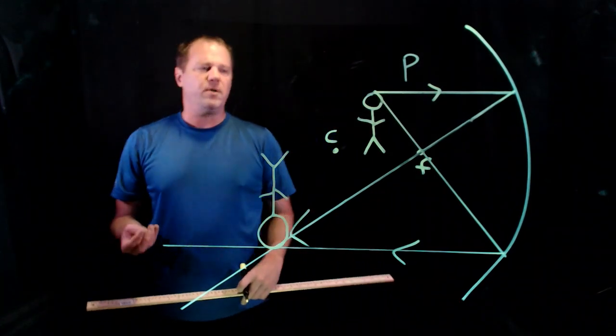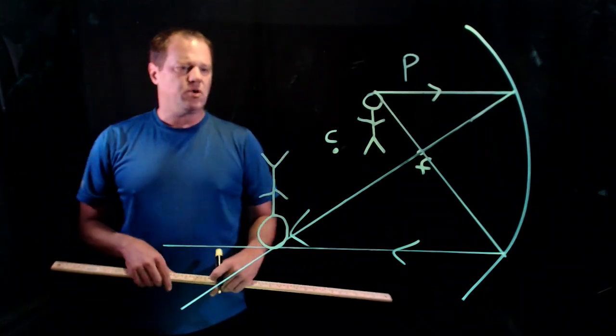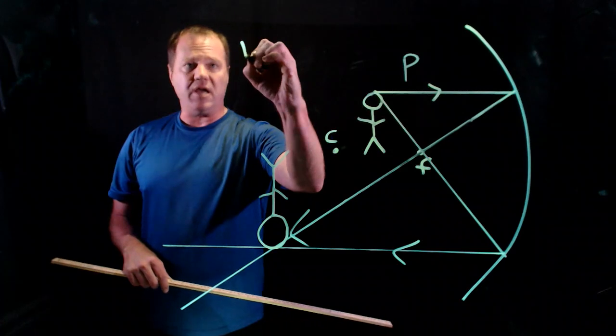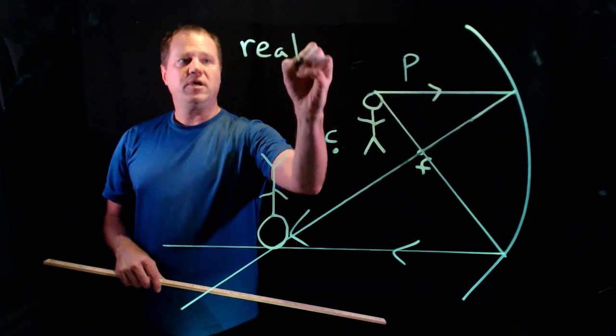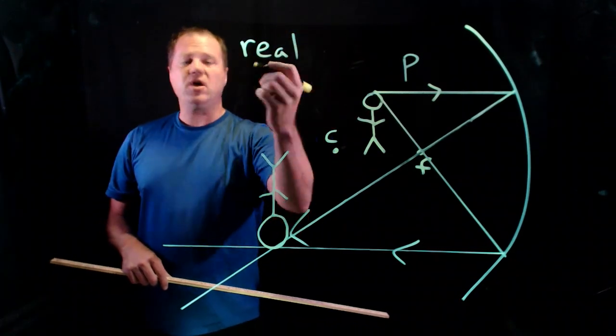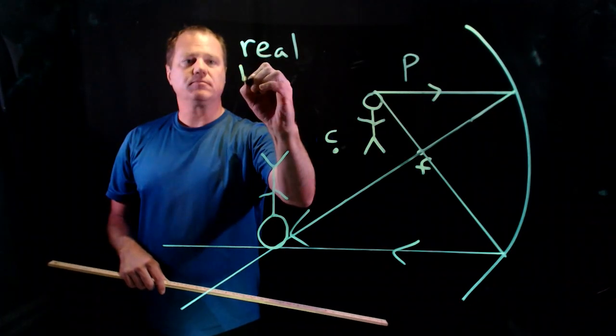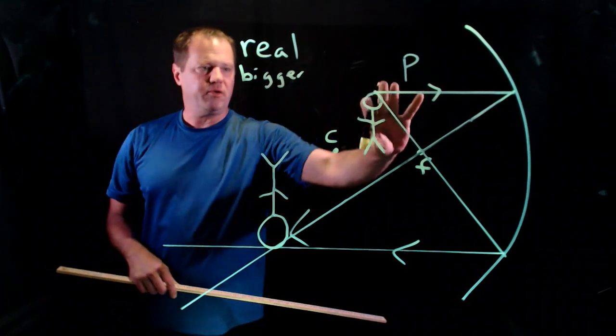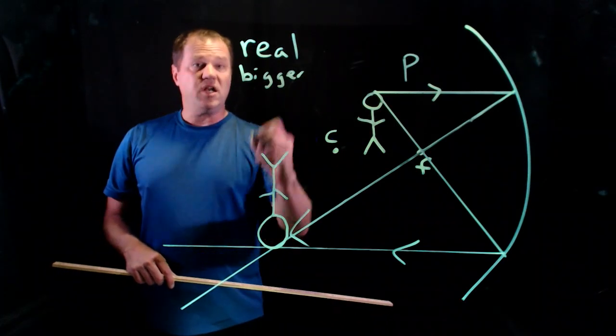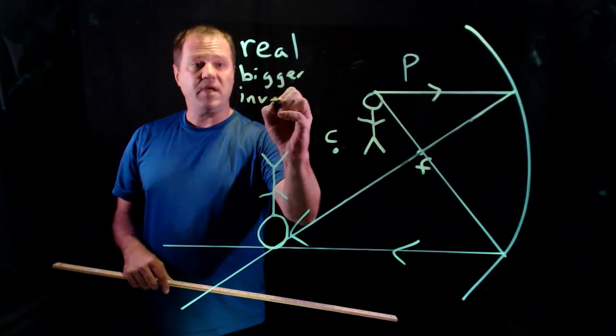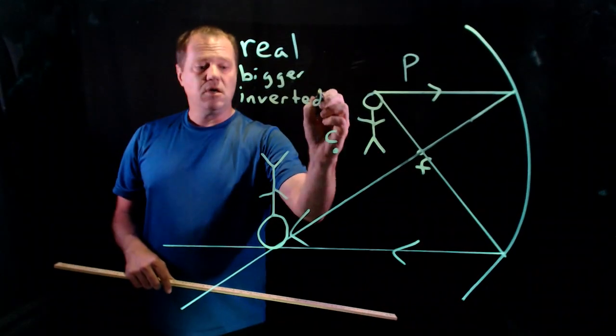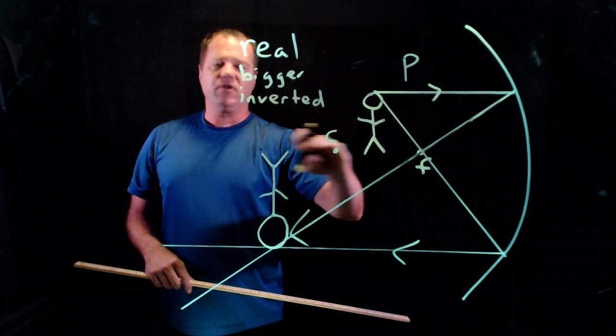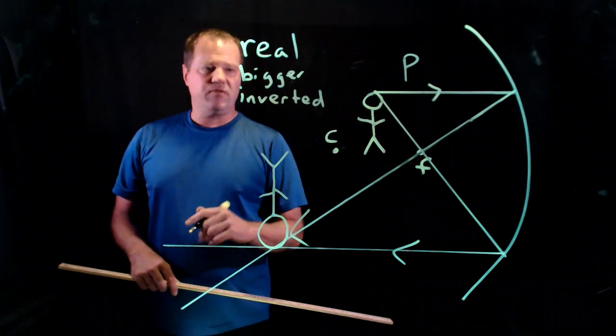Okay, so what can we conclude from this drawing? We can conclude that because the rays went there, that is a real image, not a virtual image. We can conclude that it's bigger or magnified, because this is taller than this, and we can conclude that it is inverted because the image was on a different side of the line connecting the center and the focal point.